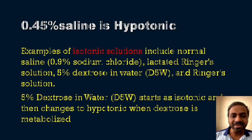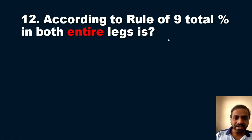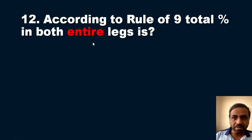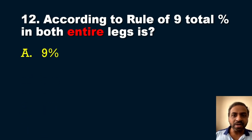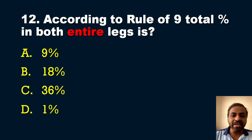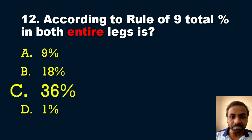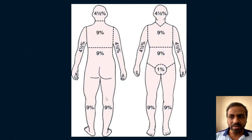The twelfth question is about the rule of nines burns calculation. According to the rule of nines, the total percentage for both entire legs is? Options: A) 9%, B) 18%, C) 36%, D) 1%. The answer is option C, 36%. In the rule of nines: head and neck = 9%; anterior chest = 9%, posterior chest = 9% (total trunk chest = 18%); anterior abdomen = 9%, posterior = 9% (total 18%); both arms anterior and posterior = 18% total; genitals = 1%.